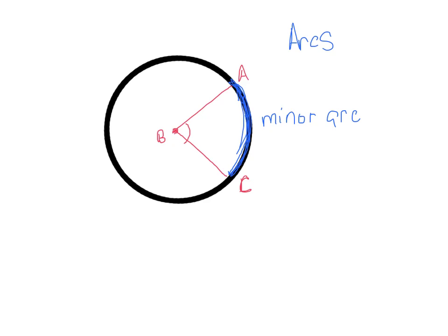And in black, which was in black before, so out here, we have what we call the major arc. So once you have that central angle, you're going to have a minor arc and a major arc.